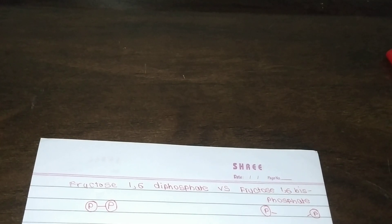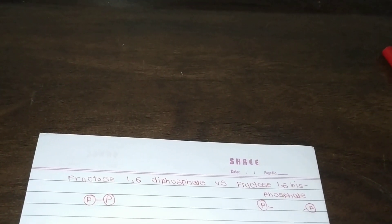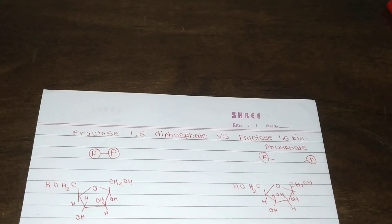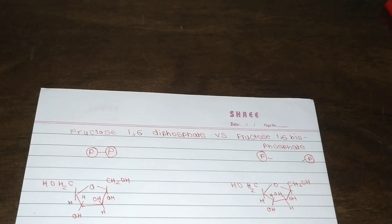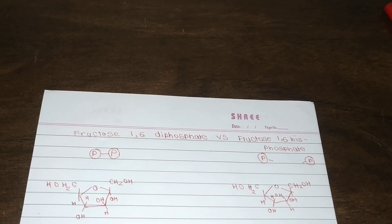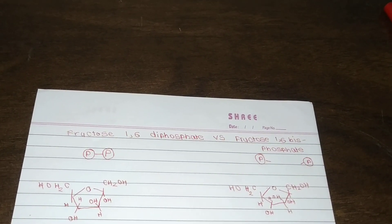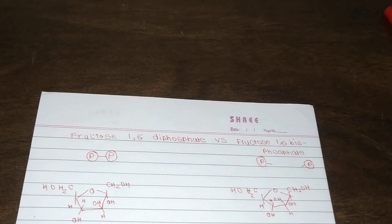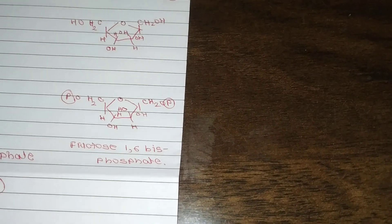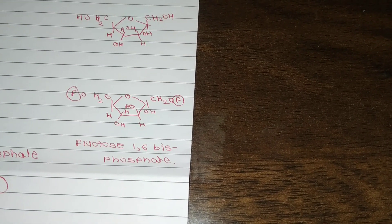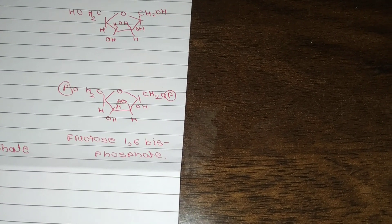Now we will try to learn the difference between these two structures. Both these are the structures of fructose. What is the difference between fructose 1,6-diphosphate and fructose 1,6-bisphosphate? First we will see the structure of fructose 1,6-bisphosphate. The two phosphates are attached at different positions — one is attached at the 6th position and one is attached at the 1st position.